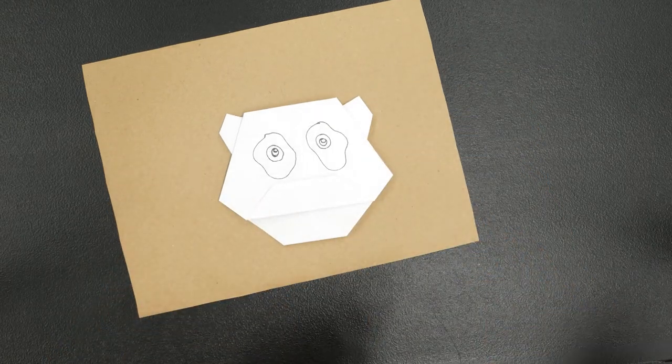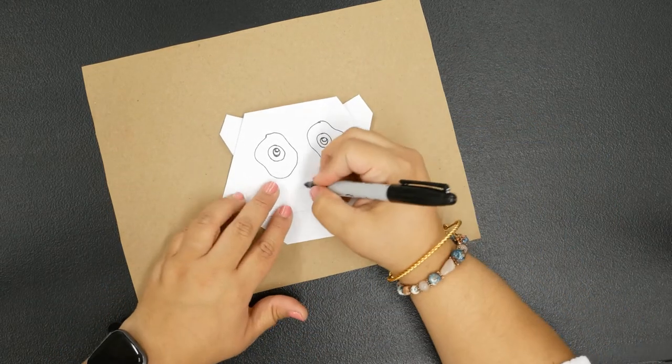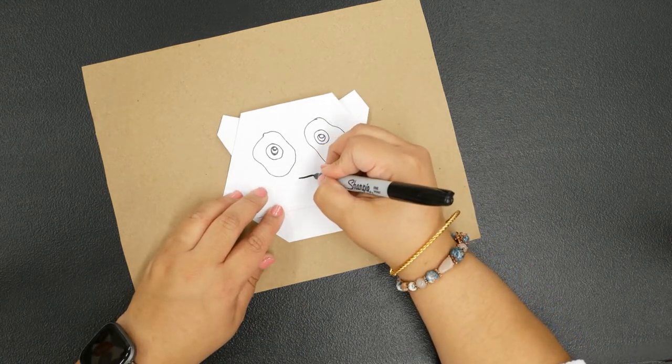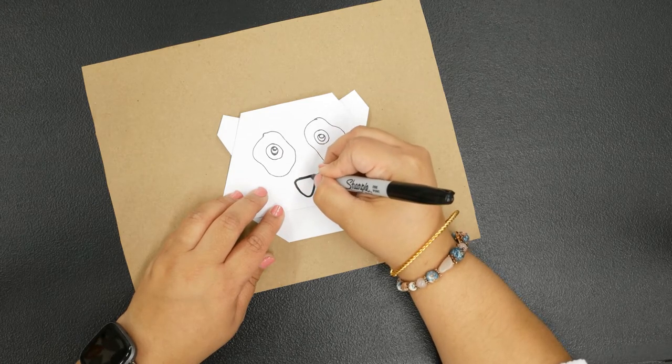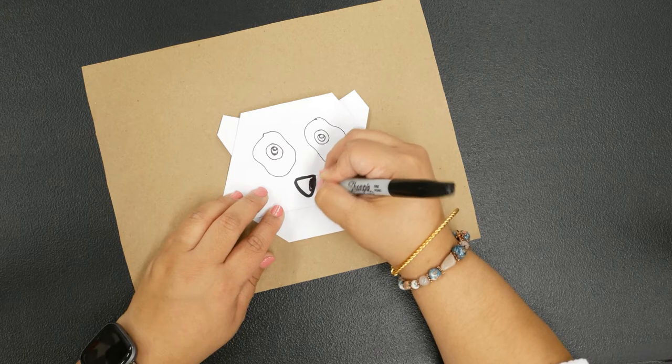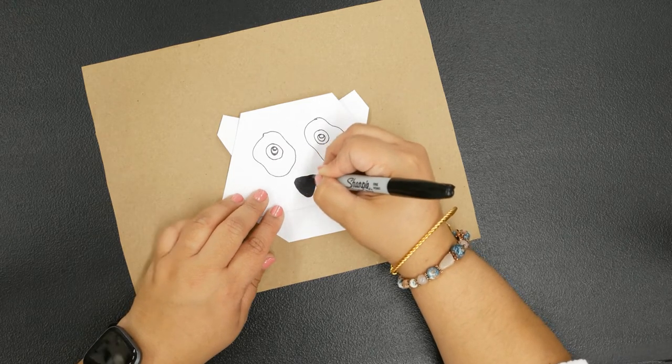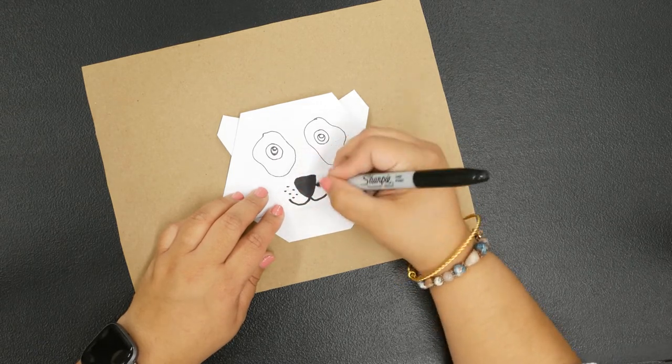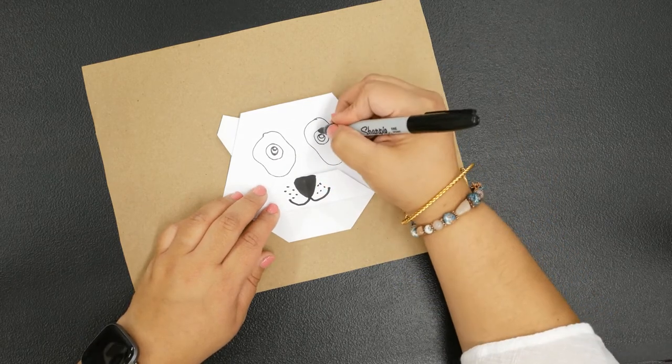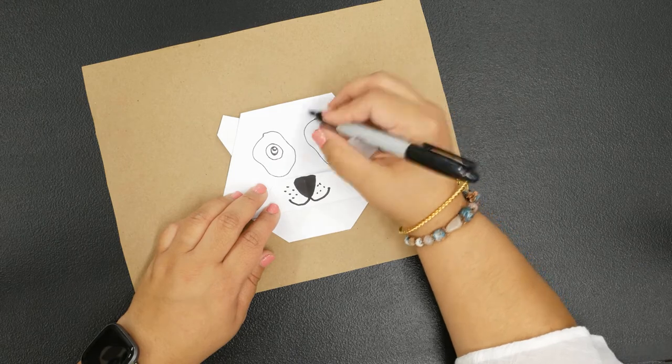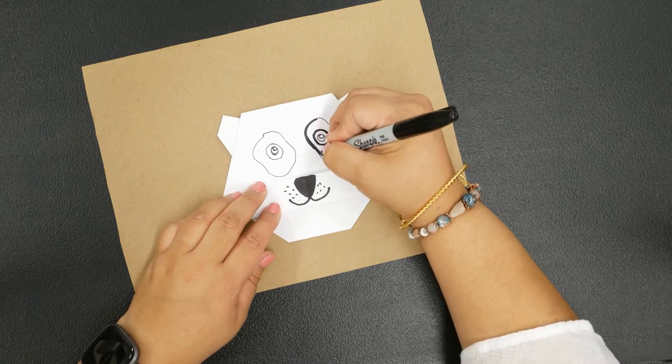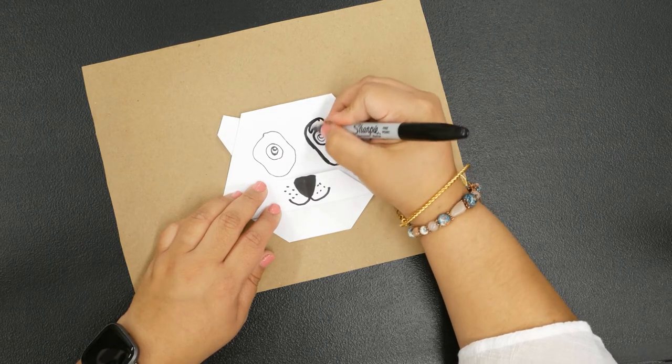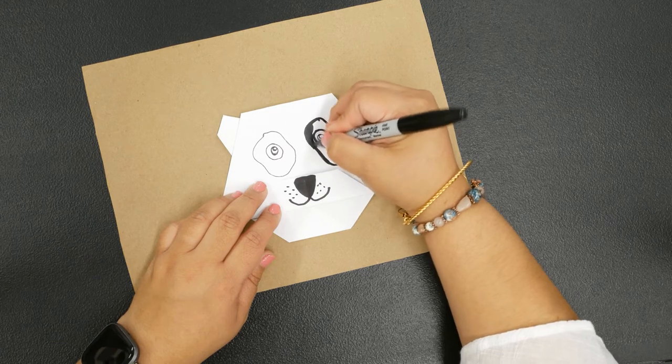I'm going to bring in a thicker marker. Here in this spot right here we're going to create his nose. You can do whatever shape you'd like. I'm going to do something that looks almost like a triangle there, some dots there. And then I'm going to color in around his eye, the patch. That is what really distinguishes the panda bear. They're so adorable.